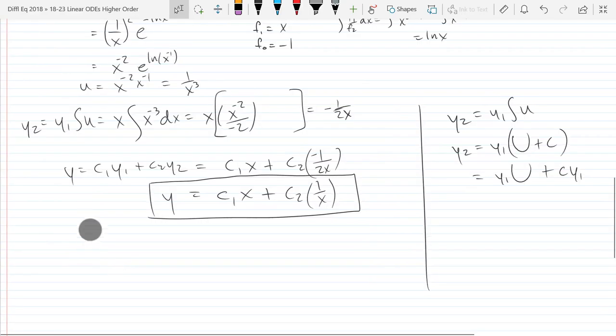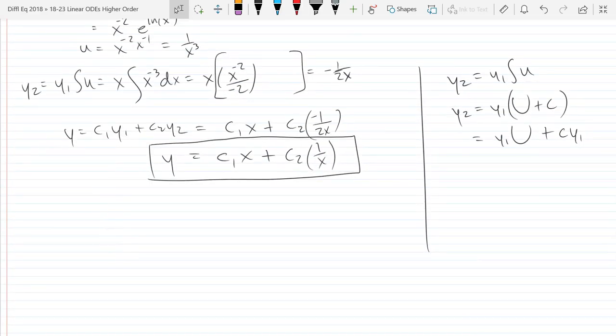Let's check to see if we're right. This is easy to take derivatives. Let's take some derivatives, we need just a first and second derivative, then plug back in. This should be a fast one to check. Y prime is C1 minus C2 x to the negative 2. Y double prime will be positive 2 C2 x to the negative 3.